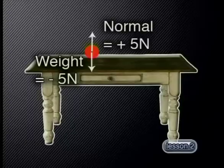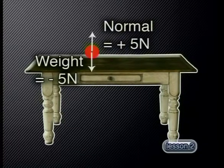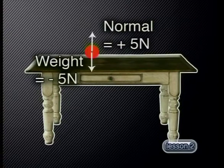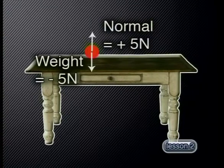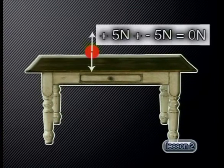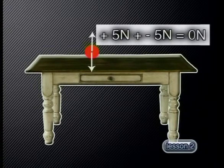Here is the free body diagram of a book on a table. The weight acts down with a force of 5 Newtons. The normal force of the table on the book is also 5 Newtons but upwards. Let up be positive and down be negative. When I add the forces together: plus 5 Newtons plus minus 5 Newtons, this gives me an answer of 0 Newtons.